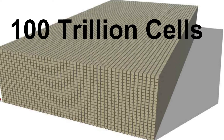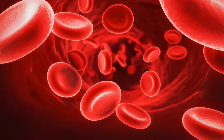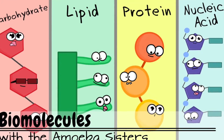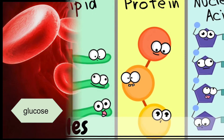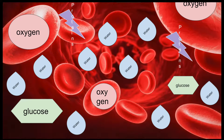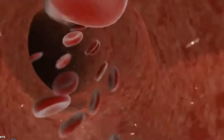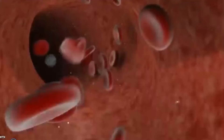All 100 trillion cells in your body receive what they need from the blood, where all the important components for cells can be found. Glucose, oxygen, water and proteins, heat plus more are carried throughout the body within the blood and are delivered to each cell.